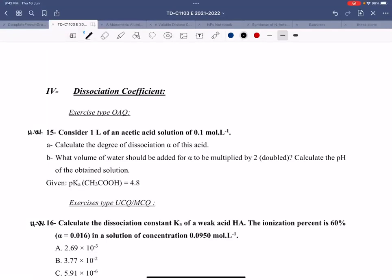Question number 15: Consider 1 liter of an acetic acid solution. If you don't know what acetic acid is or whether it's weak or strong, you can simply look at the data given below and you will see that acetic acid is CH3COOH and it is weak because its pKa is given as 4.8.